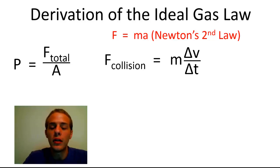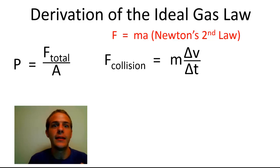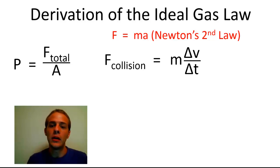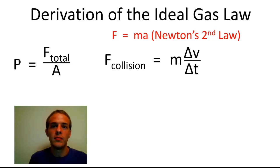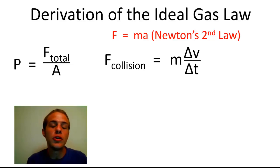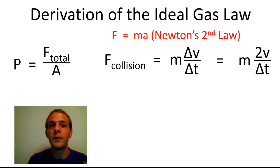The change in velocity during a collision is actually pretty easy to determine if you assume completely elastic collisions. Initially, when the particle is traveling toward the container wall, its velocity is v. After it bounces back, its velocity is −v. So the change in velocity is simply 2v. We can then write the force of each collision as mass times 2v over Δt. Note: lowercase v is velocity, uppercase V is volume.